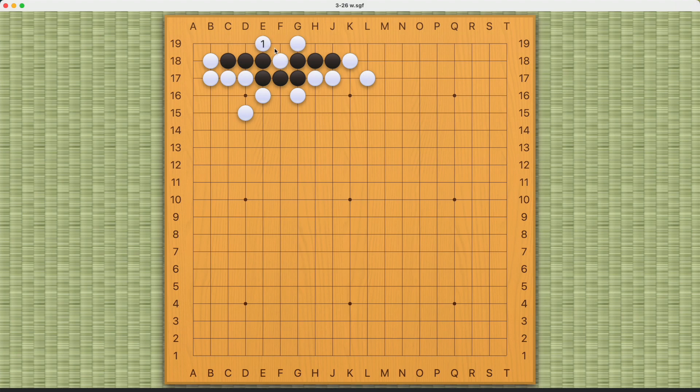However, if white plays here, this can lead to a ko. But can black avoid a ko and still achieve seki? And the answer is no.